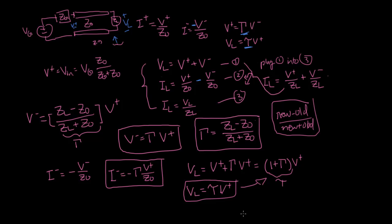There are a few things to note about this result. First, gamma is always going to be between one and minus one, depending on whether ZL is an open or short circuit. If ZL is a short, ZL equals zero and you get gamma equals minus one. If ZL is open, the ZL terms dominate and you get gamma equals one.